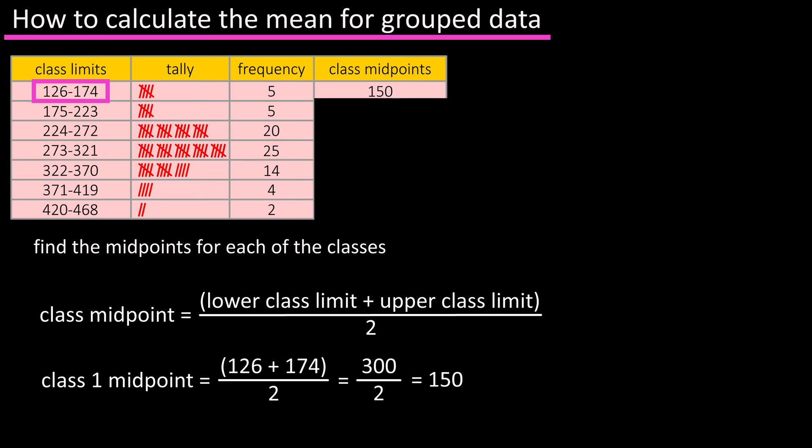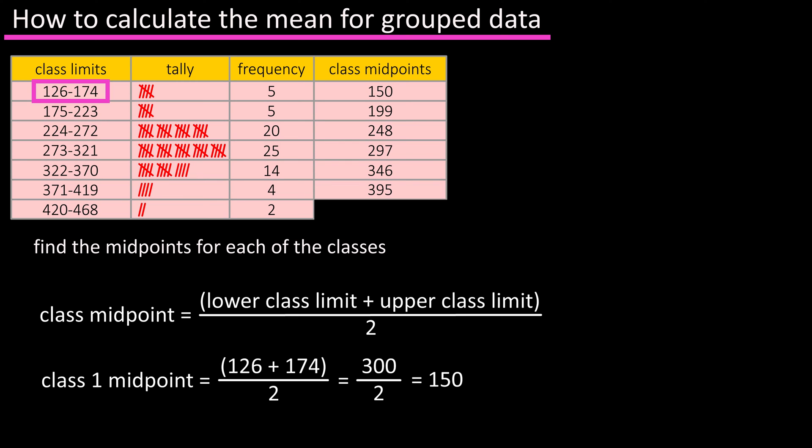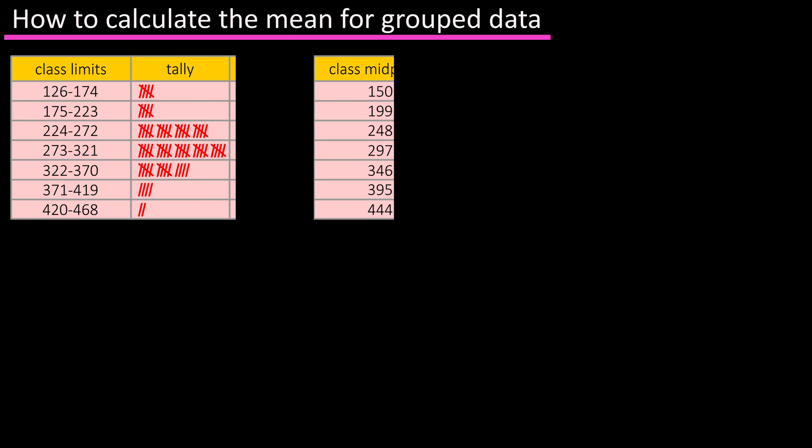Continuing this process for the remaining six classes, we get 199, 248, 297, 346, 395, and 444.